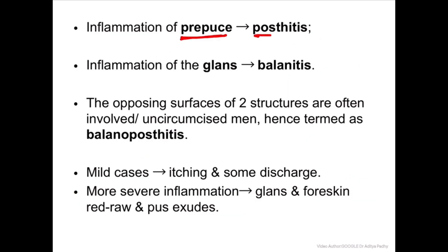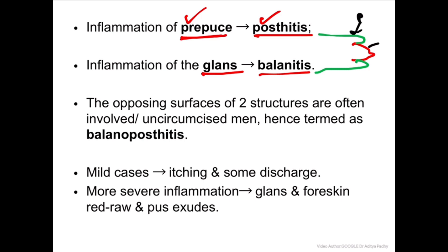Inflammation of the prepuce is called posthitis. Inflammation of the glans of the penis is called balanitis. If both surfaces are involved - that is, the opposing surfaces of the prepuce as well as the glans - it is called balanoposthitis. Each of these points are important for clinical questions.